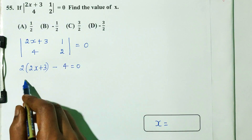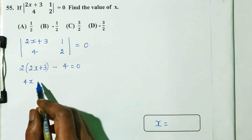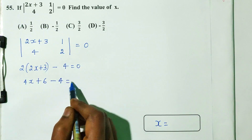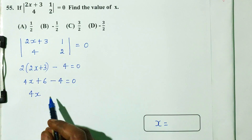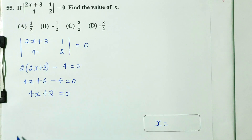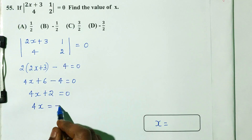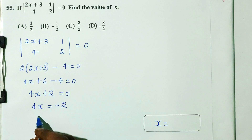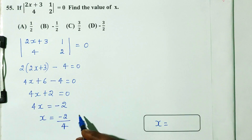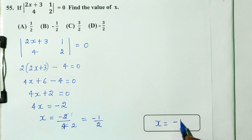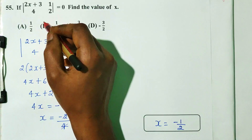Applying the determinant formula: 2 into (2x plus 3) minus 4 into 1 equals 0. Expanding: 4x plus 6 minus 4 equals 0, so 4x plus 2 equals 0, giving x equals minus 2 divided by 4, which is minus 1 by 2. Option B is the right answer.